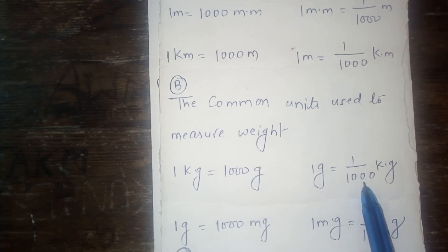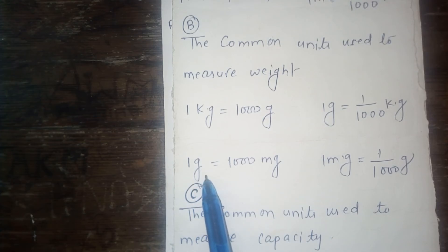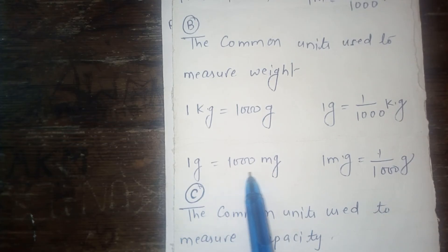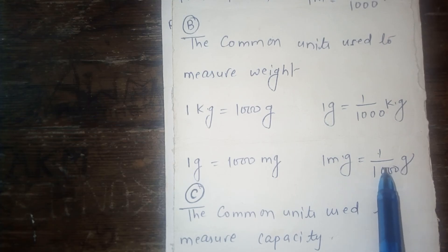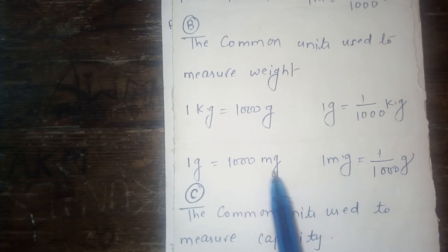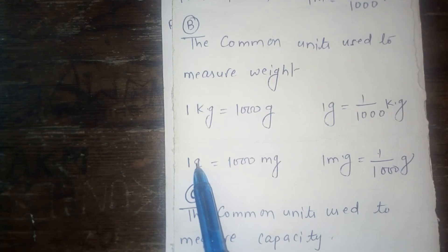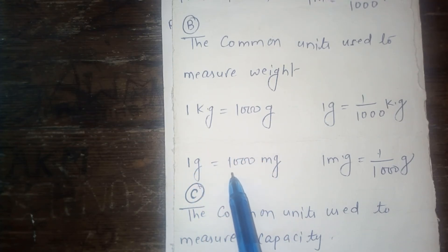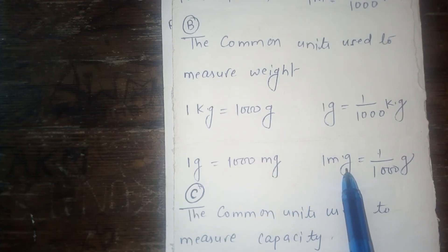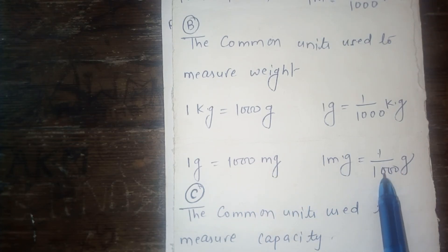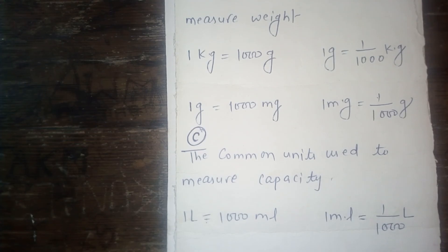When kilogram is converted to gram, then multiply by 1000, and when gram is converted to kilogram, then divide by 1000. Again, 1 gram is equal to 1000 milligrams, and 1 milligram is equal to 1 upon 1000 gram. When gram is converted to milligram, then multiply by 1000, and when milligram is converted to gram, then divide by 1000.